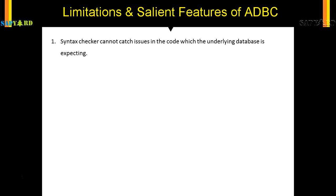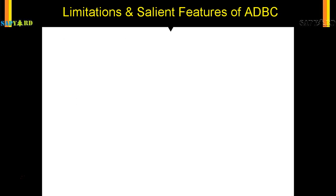The object-oriented approach brings flexibility, and error handling of native SQL code is better in ADBC — we can handle errors more efficiently than with plain native SQL. The first salient feature of ADBC is that, just like native SQL, the syntax checker cannot catch issues in the code that the underlying database is expecting. Therefore, we should always handle exceptions such as CX_SQL_EXCEPTION. We need to do this because we do not know if the SQL is correct at write time — we only know at runtime, and we do not want short dumps.